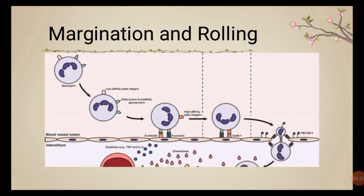First, margination and rolling: as blood moves from capillaries into post-capillary venules, circulating cells move from the laminar flow toward the vessel wall. Because red cells are smaller and move in the central axial line, white blood cells have more opportunity to interact with the vessel wall. As seen with stasis, WBCs interact with the endothelial wall, and when the endothelial lining is activated by cytokines, different adhesion molecules are expressed.